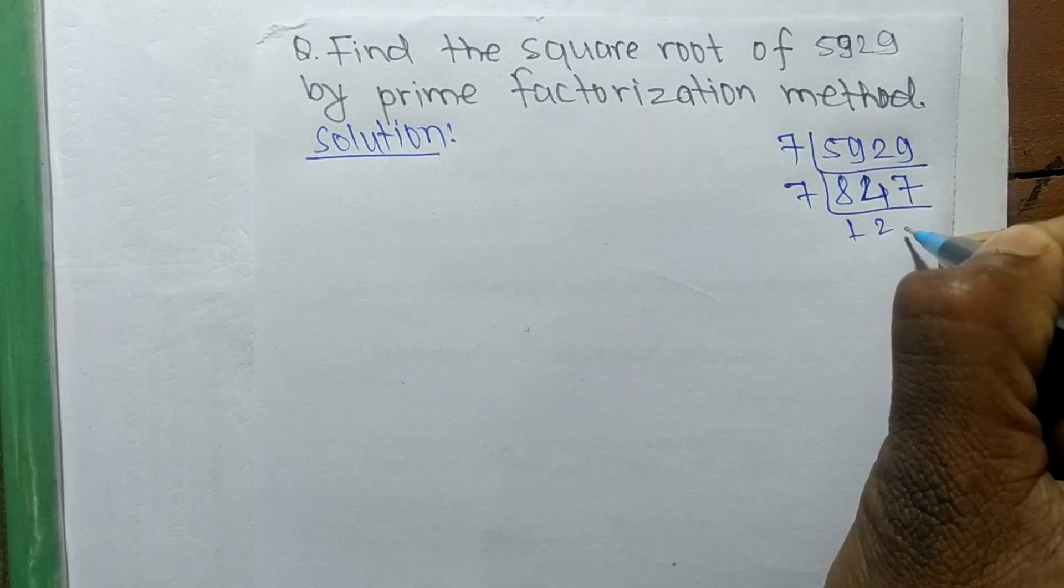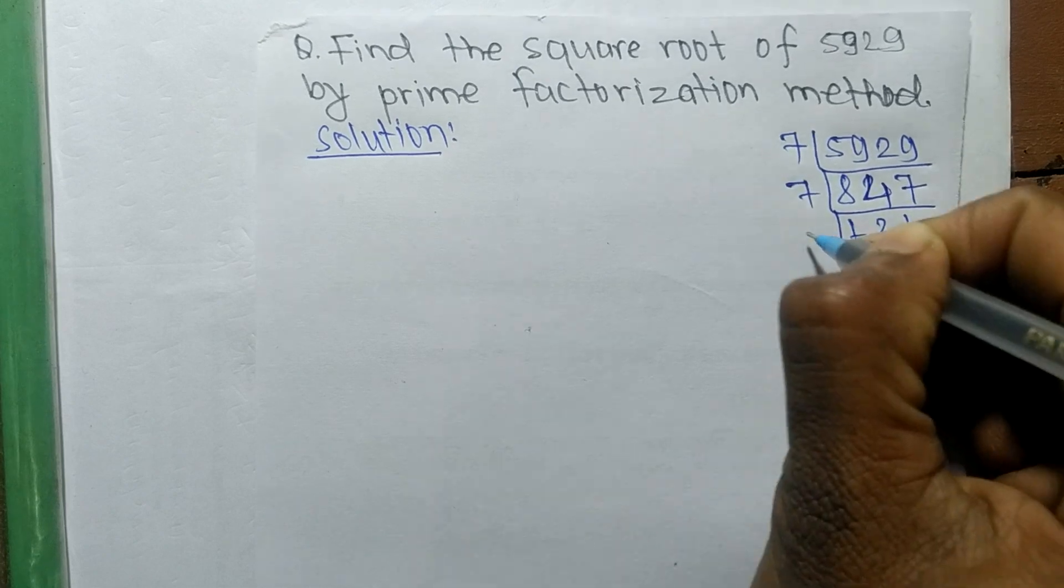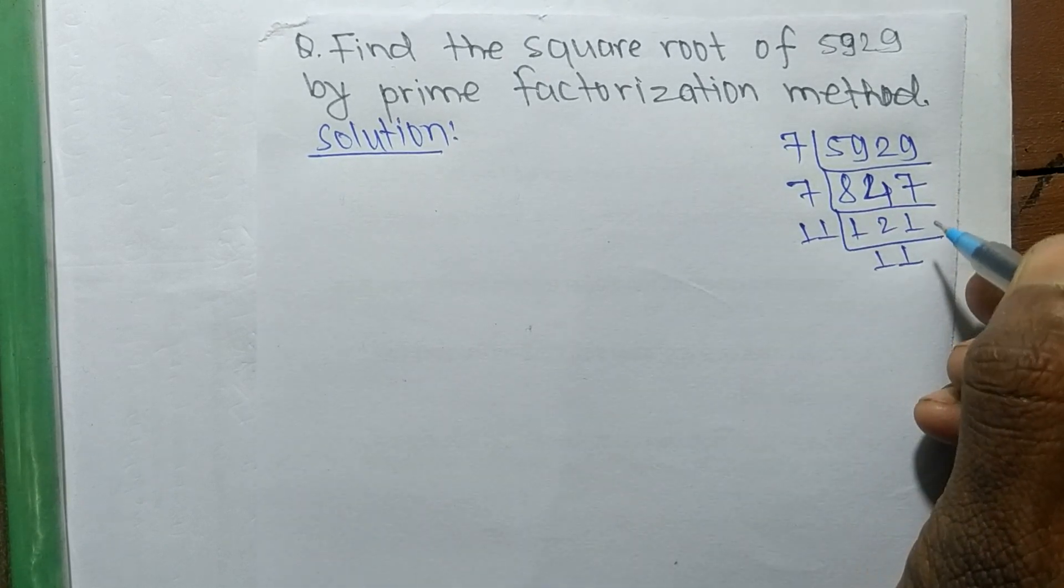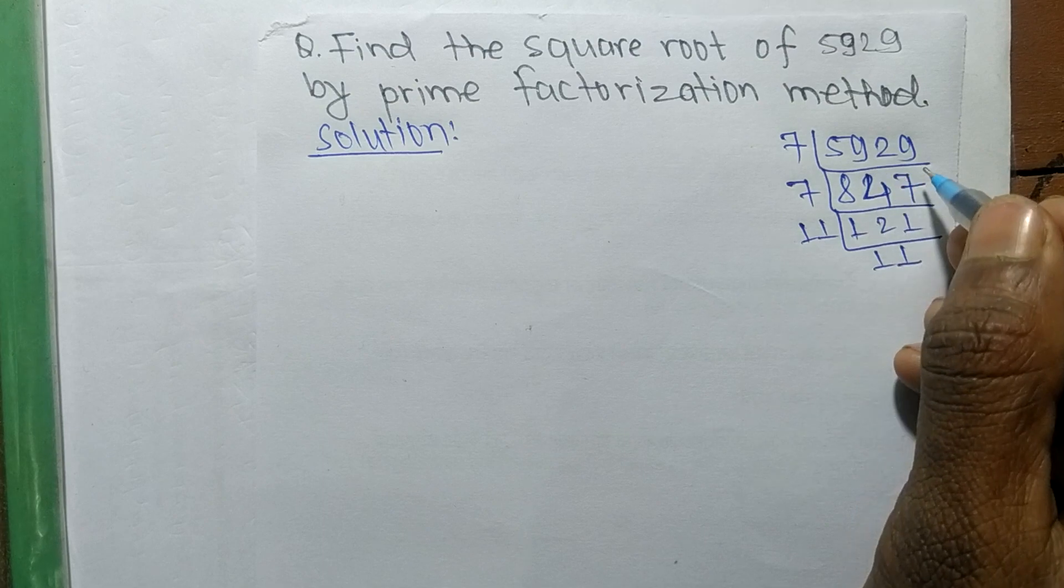So it is 7, 1, 2, 1. So it is equal to 11 times 11. So after finding prime factors, now we find out the square root of 5929.